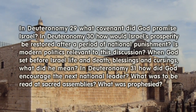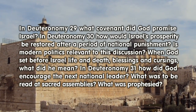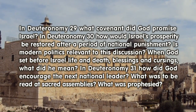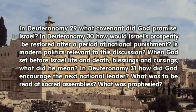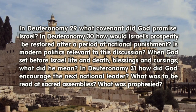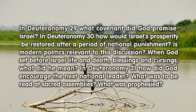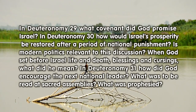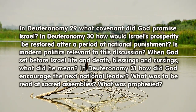In Deuteronomy 29, what covenant did God promise Israel? In Deuteronomy 30, how would Israel's prosperity be restored after a period of national punishment? Is modern politics relevant to this discussion? When God set before Israel life and death, blessings and cursings, what did he mean?